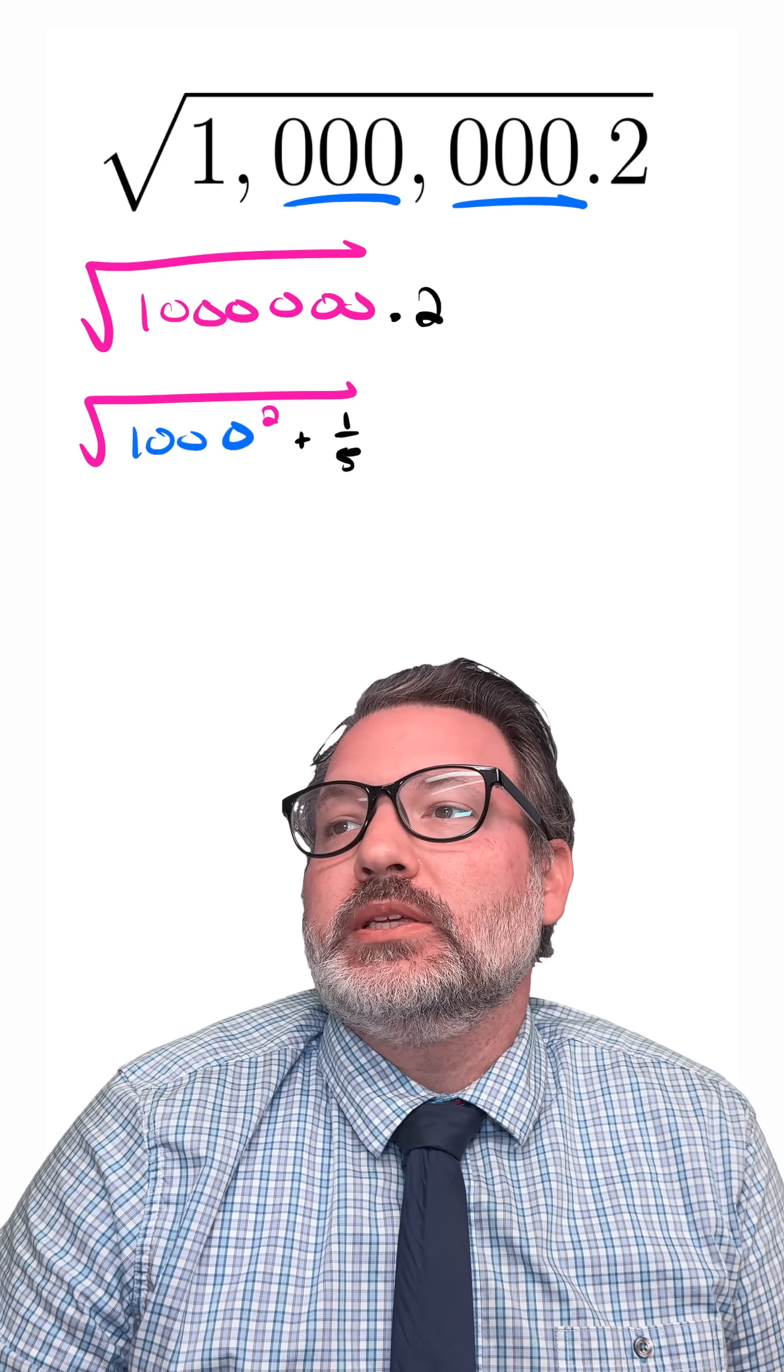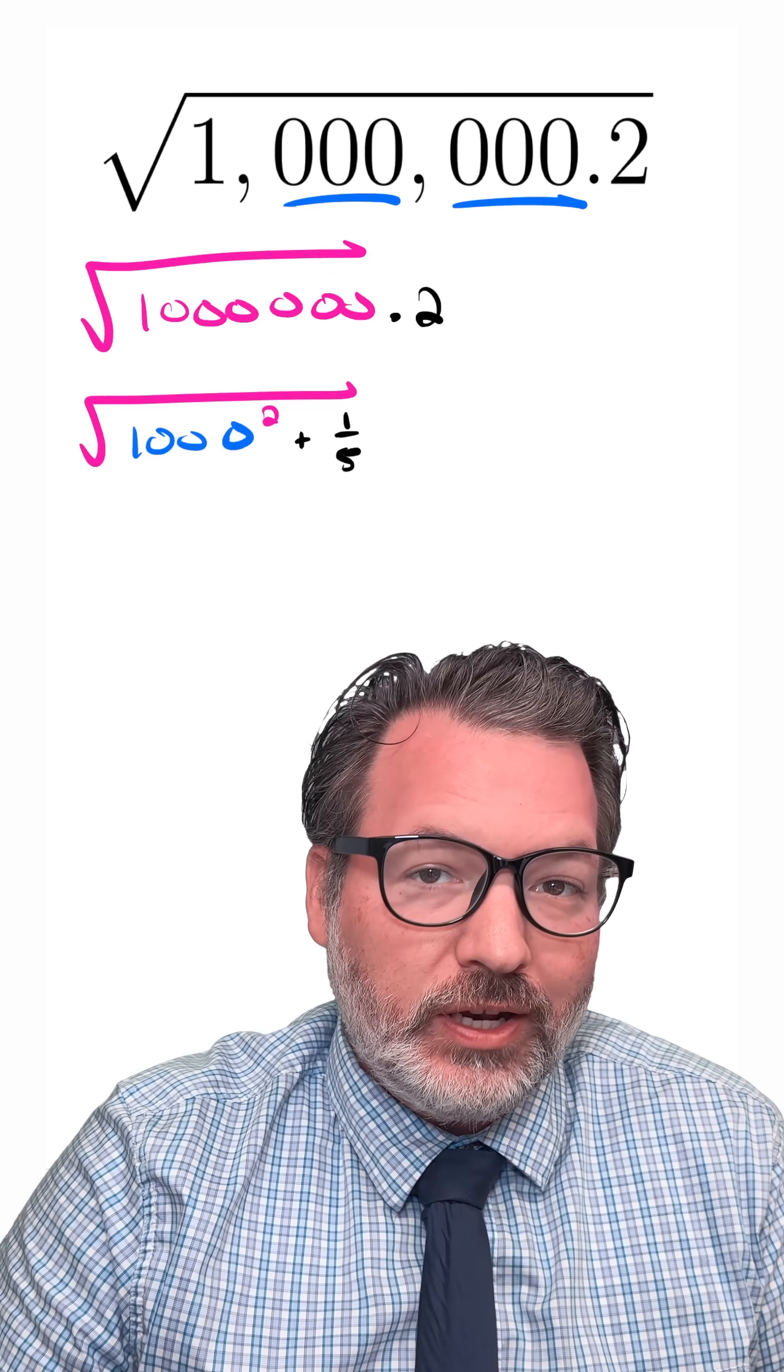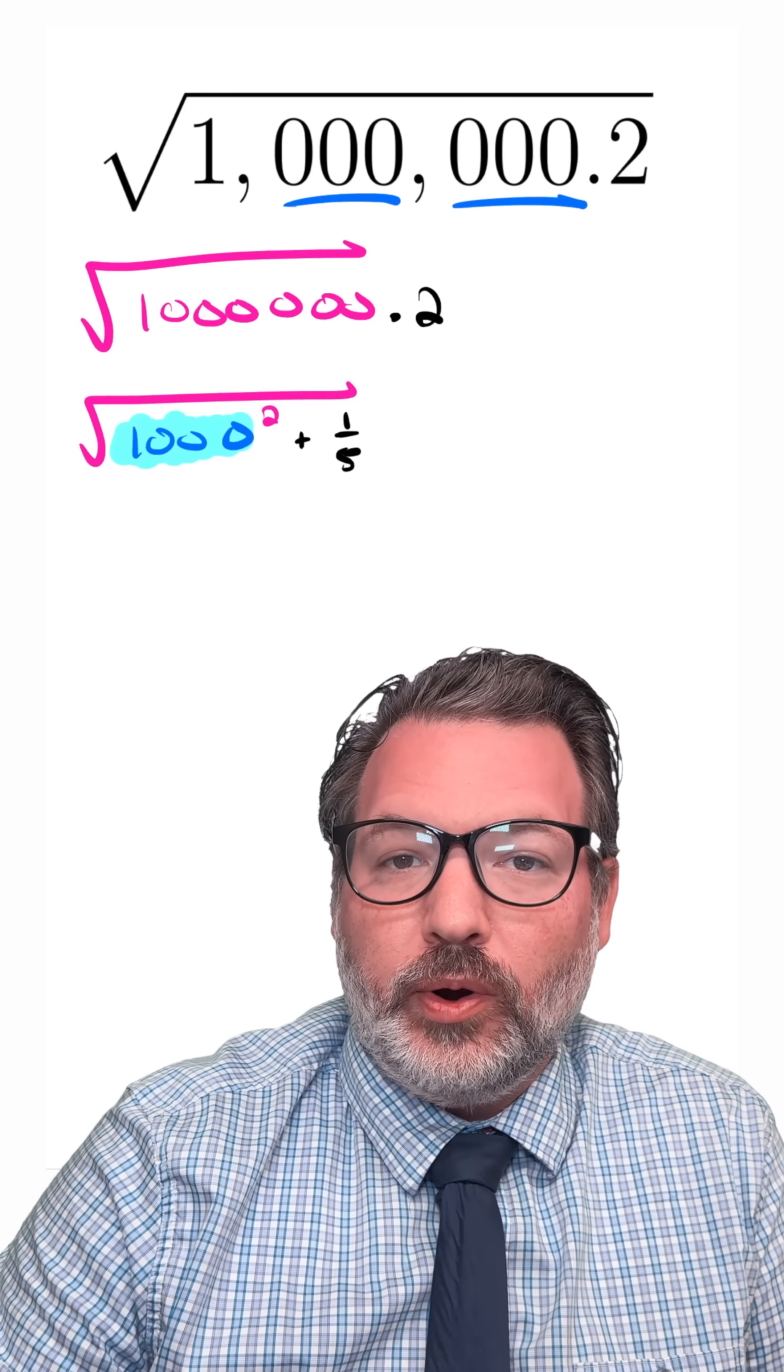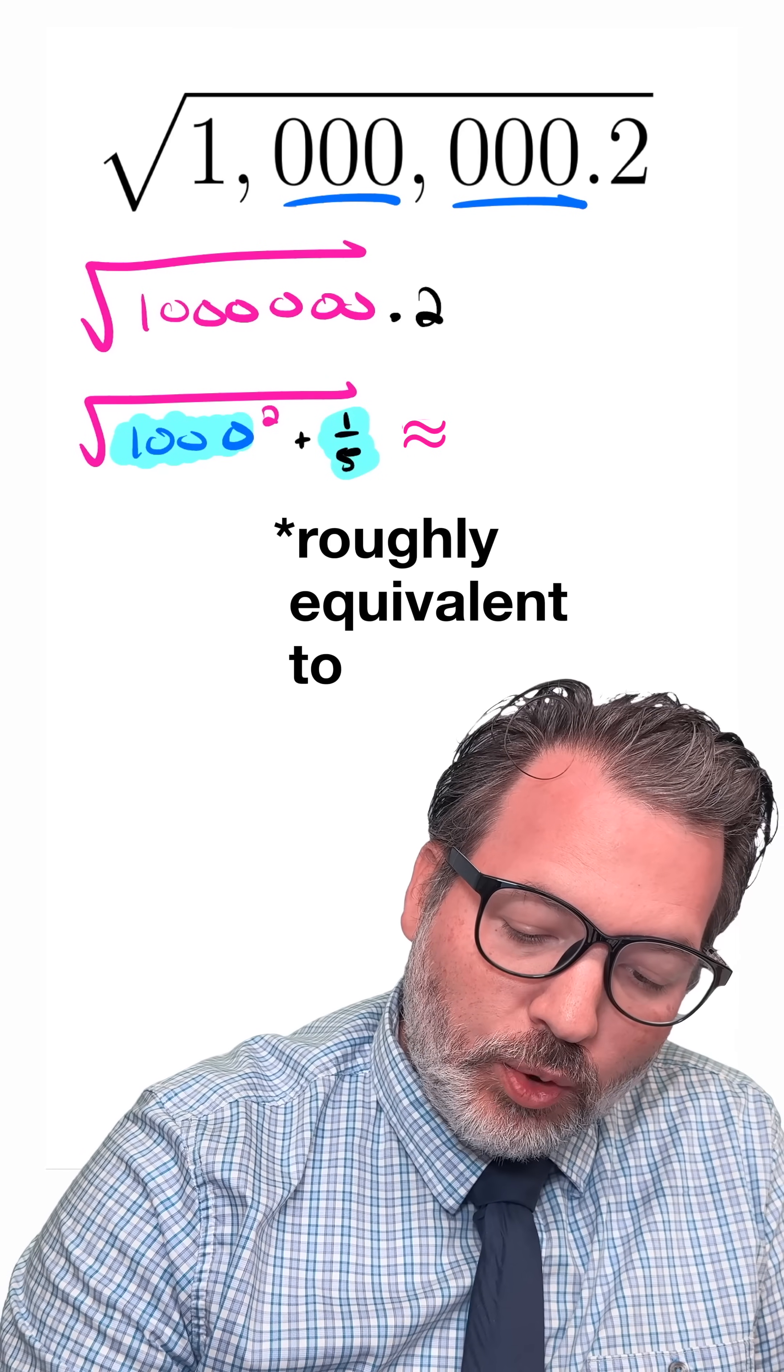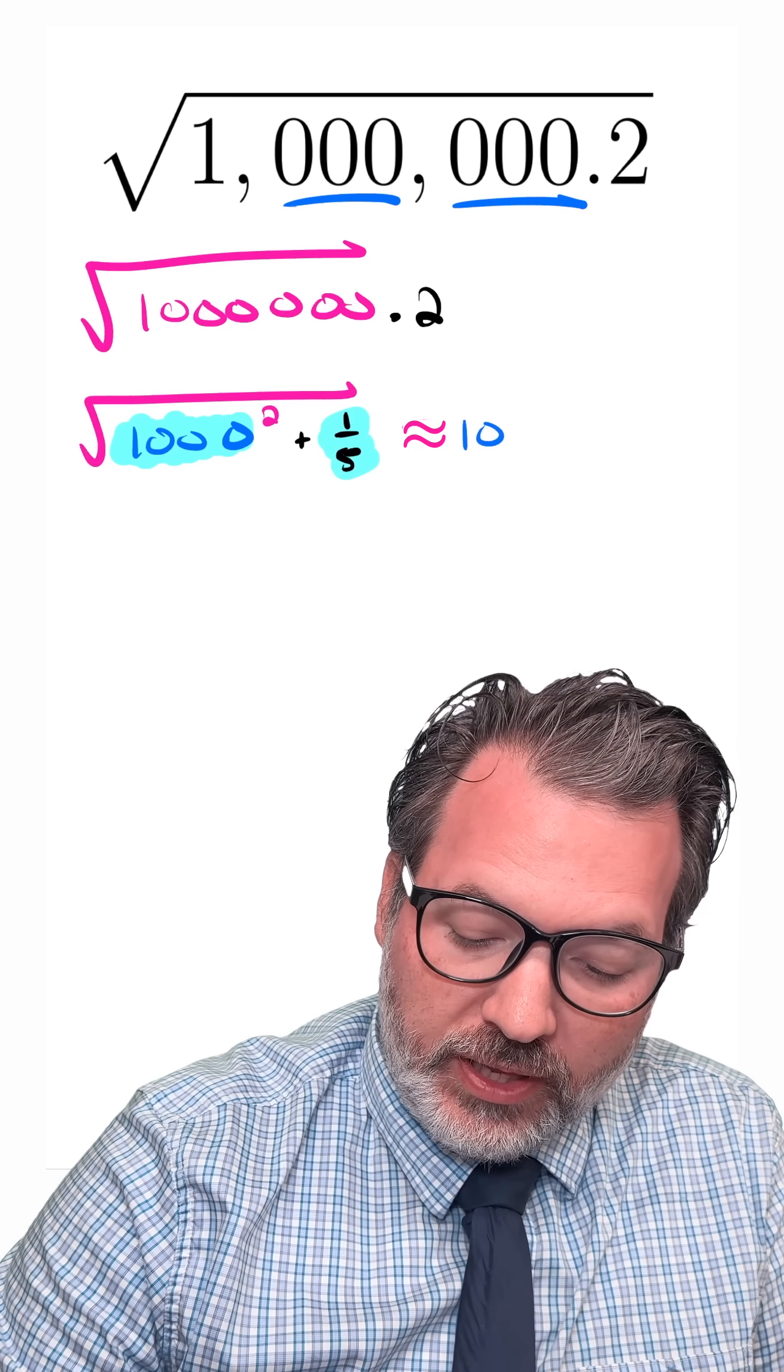Now why would I do it this way? There is this neat little approximation that when you have a square root of a number that can be expressed as some really large perfect square plus something else that's quite a bit smaller, that has to be equivalent to the square root of the large perfect square.